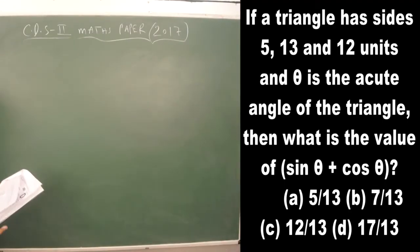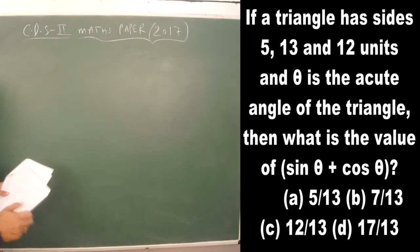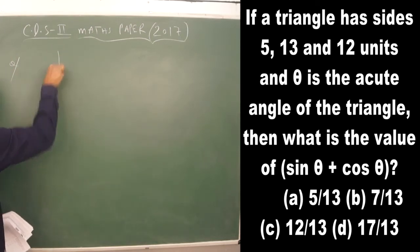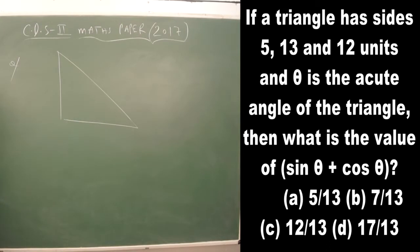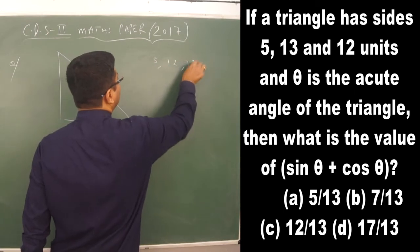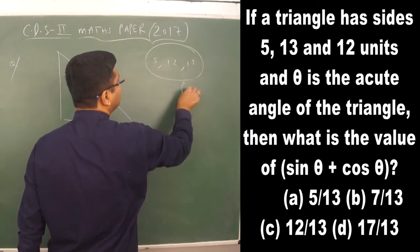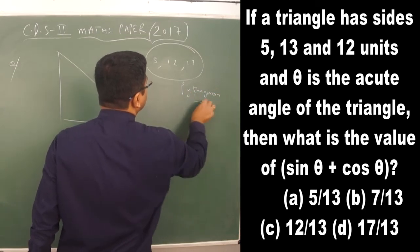The next question is from the trigonometry chapter. If a triangle has sides 5, 13, and 12 units — whenever the sides of a triangle are 5, 12, and 13, it is a right angle triangle, because 5, 12, and 13 are Pythagorean triplets.